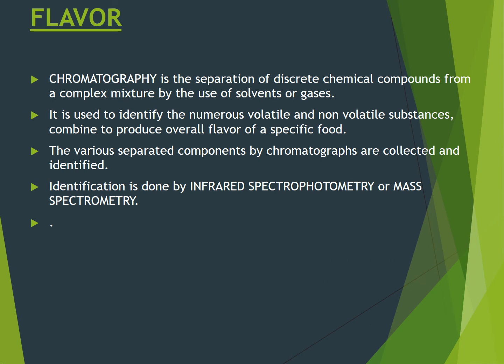For flavor analysis, chromatography is used, in which from a complex mixture of food the chemical compounds are first separated. The numerous volatile and non-volatile substances are then identified and combined to produce the overall flavor of a specific food. This identification is done by infrared spectrophotometry or mass spectrometry.